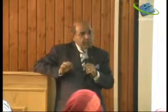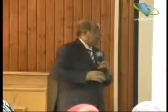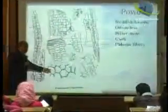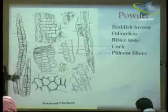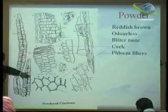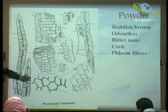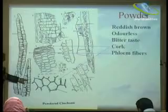Key elements means: if you see any of these elements, it is confirmatory that this is Cinchona. The key elements of powder Cinchona are the cork with its brown contents and bast fibers. This is the fiber — fusiform shape, striated wall, wall thick and striated, lignified, narrow lumen, funnel-shaped pits.